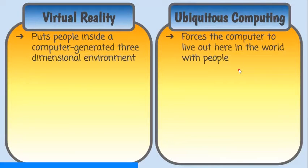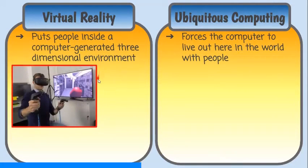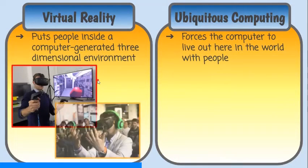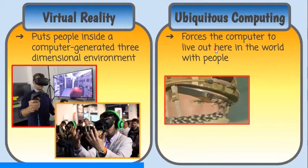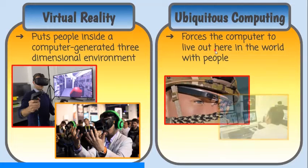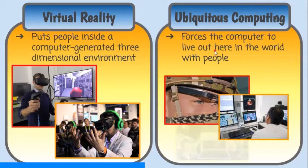Let's compare virtual reality and ubiquitous computing. Virtual reality puts people inside a computer-generated three-dimensional environment. On the other hand, ubiquitous computing focuses the computer to live out here in the world with people.